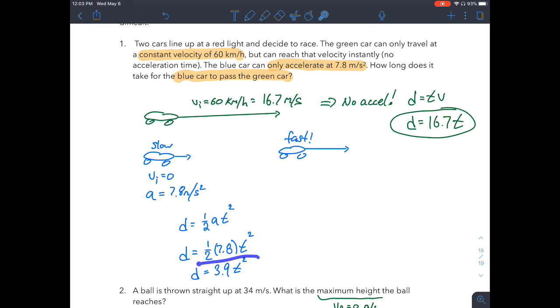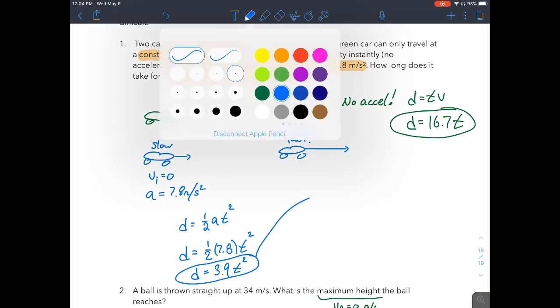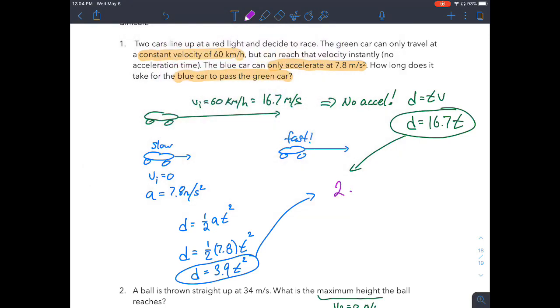In two seconds, this blue car has only traveled, well, 2 squared is 4, 4 times 4 is 16 meters, whereas the green car has traveled 32 meters. So again, hasn't caught up. But we can't just go step by step like that. We need a better way. And what we have here with the blue car and the green car, if we combine these two things together, what we have is a system of equations. We have two equations, two unknowns.